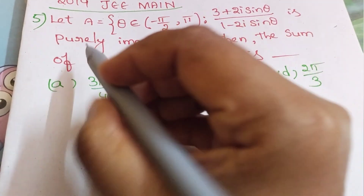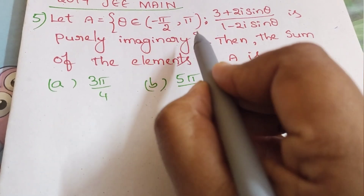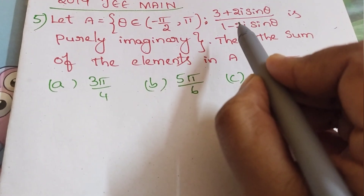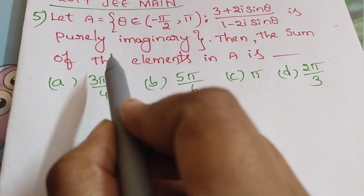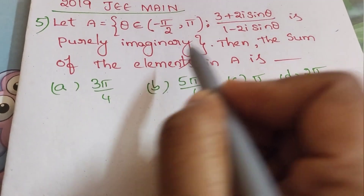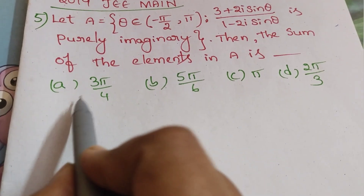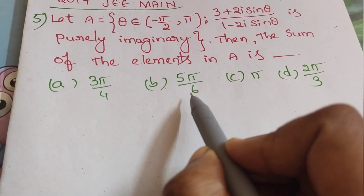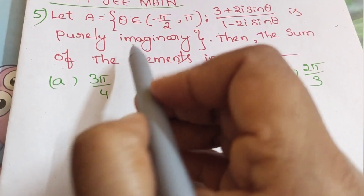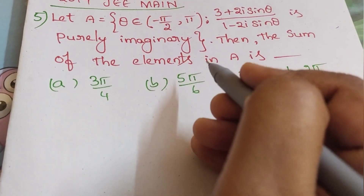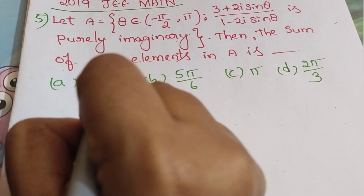The next question: let A be the set where theta belongs to the open interval (minus pi by 2, pi) such that (3 + 2i sin theta) divided by (1 minus 2i sin theta) is purely imaginary. Then the sum of the elements in A is: option A: 3pi/4, option B: 5pi/6, option C: pi, option D: 2pi/3.